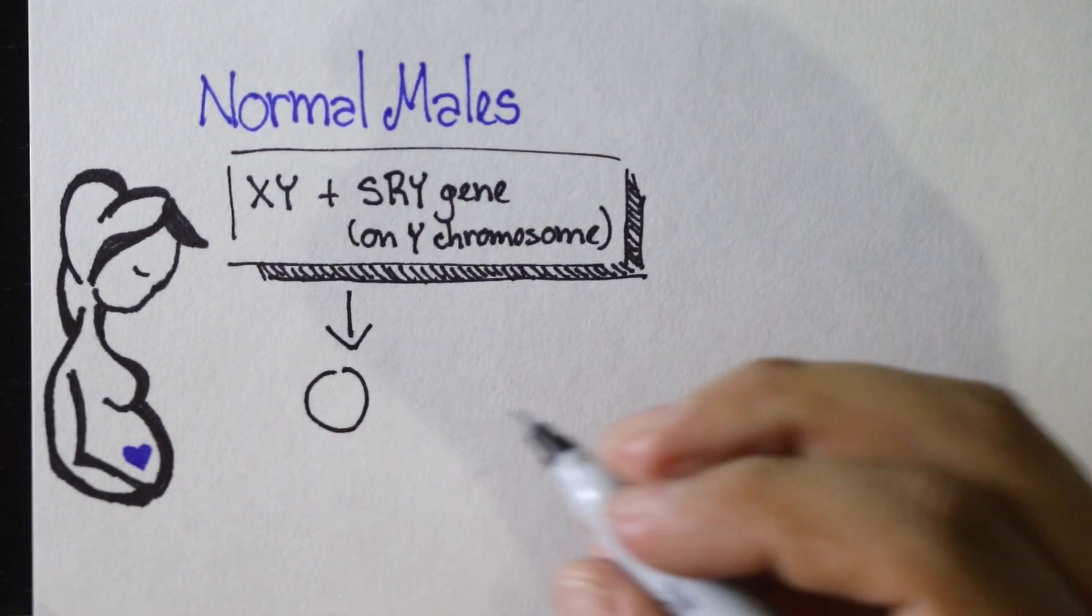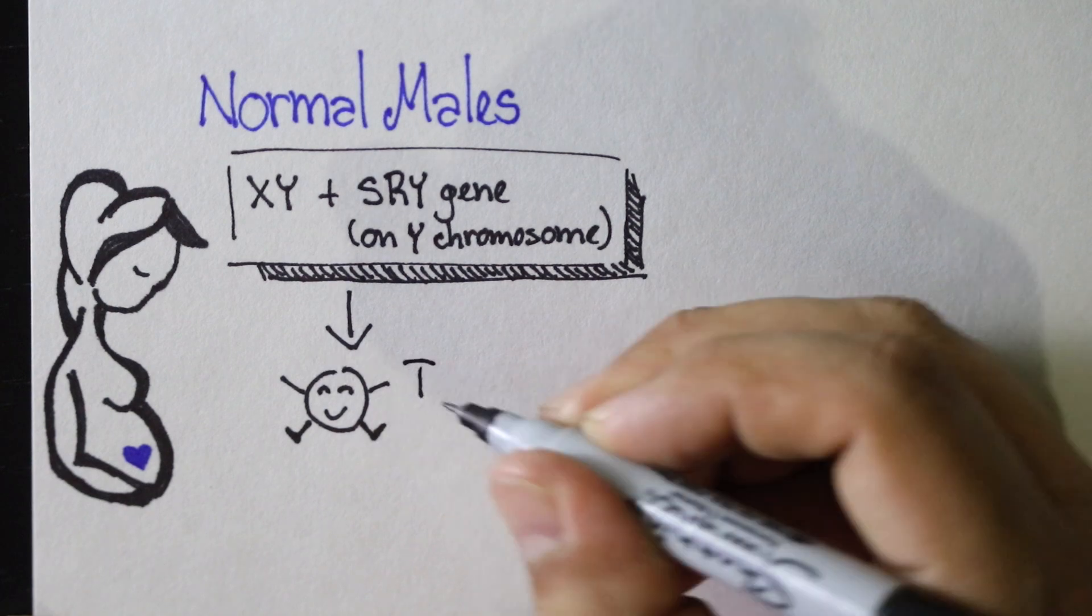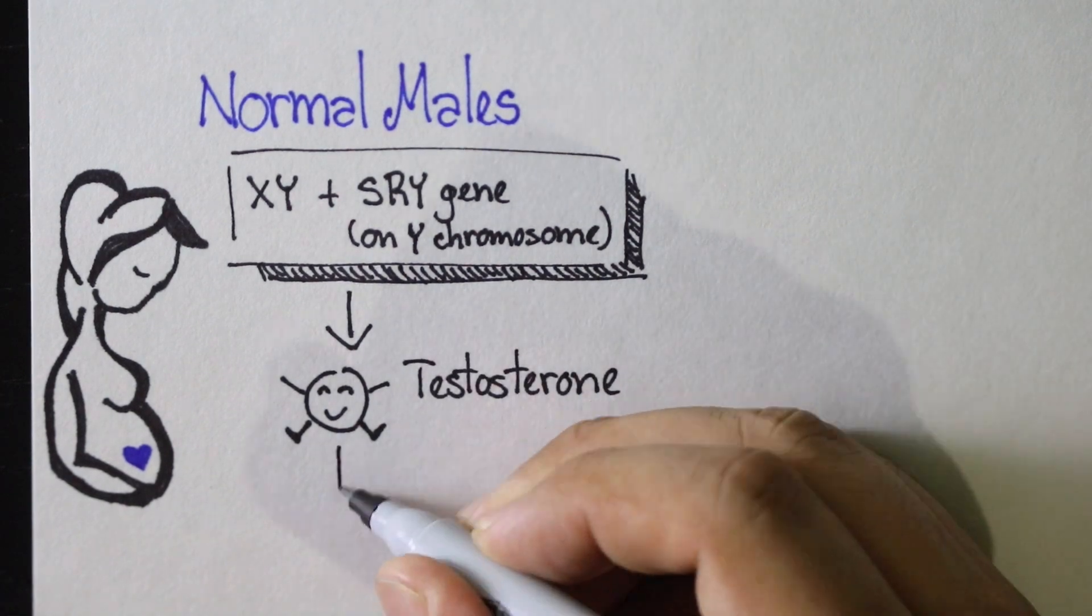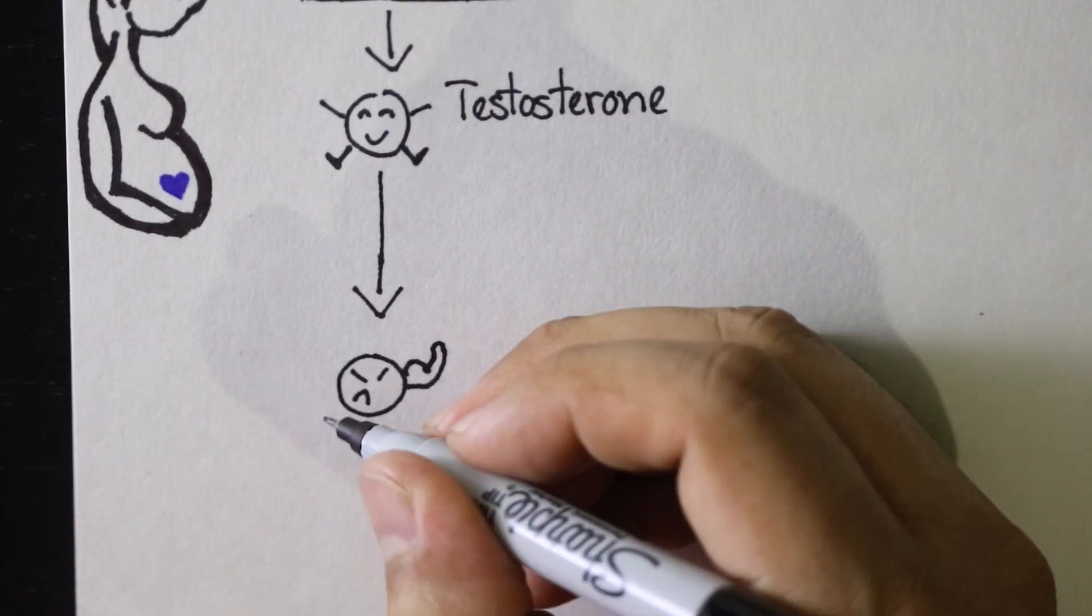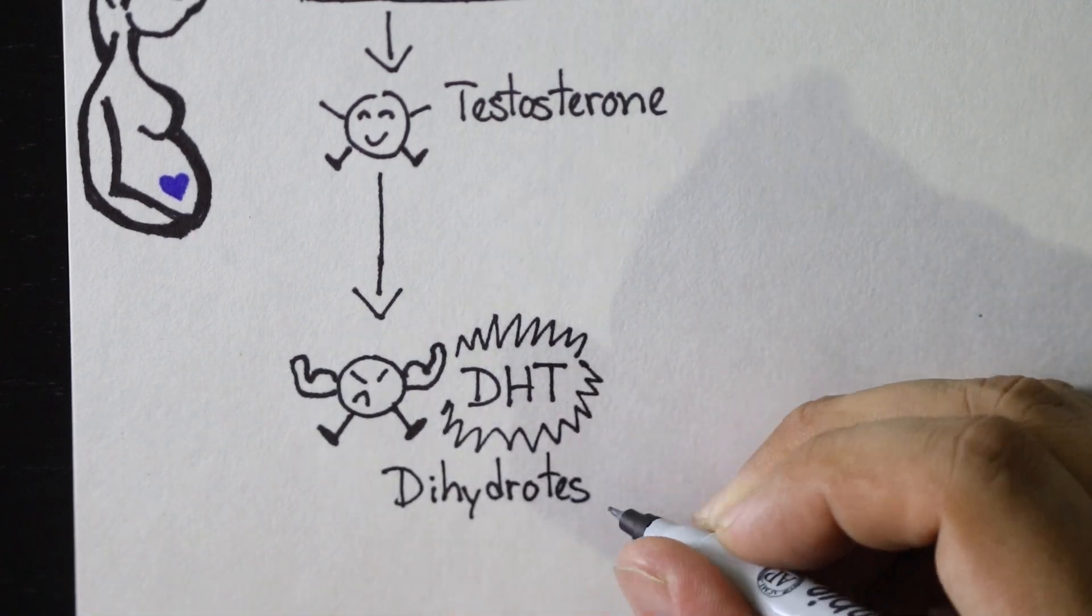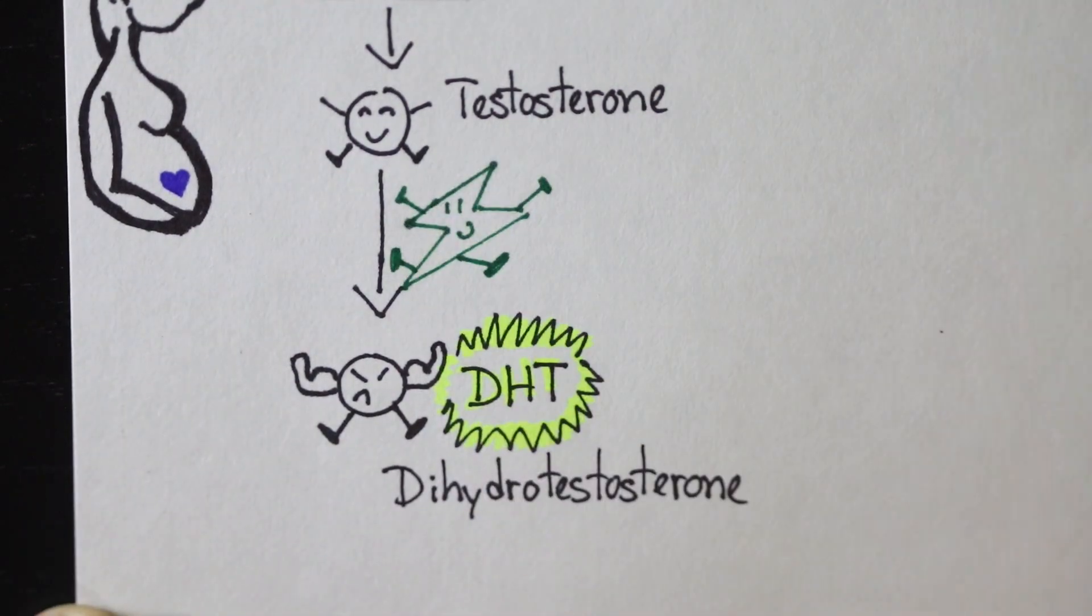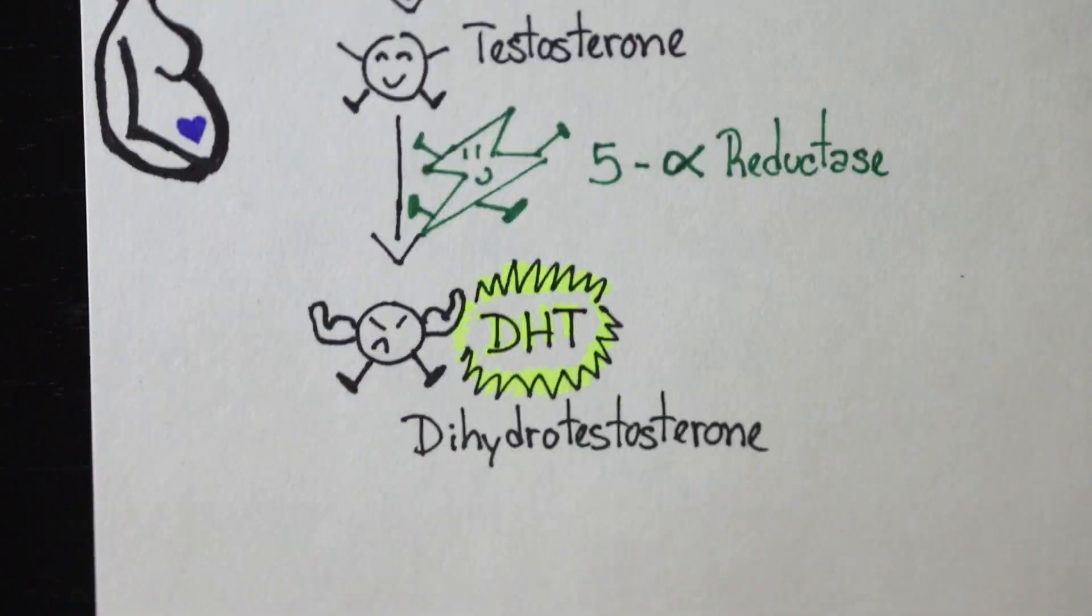In the testes, a very important sex hormone is made called testosterone. Testosterone is then converted into a more important form called DHT by an enzyme called 5-alpha reductase.